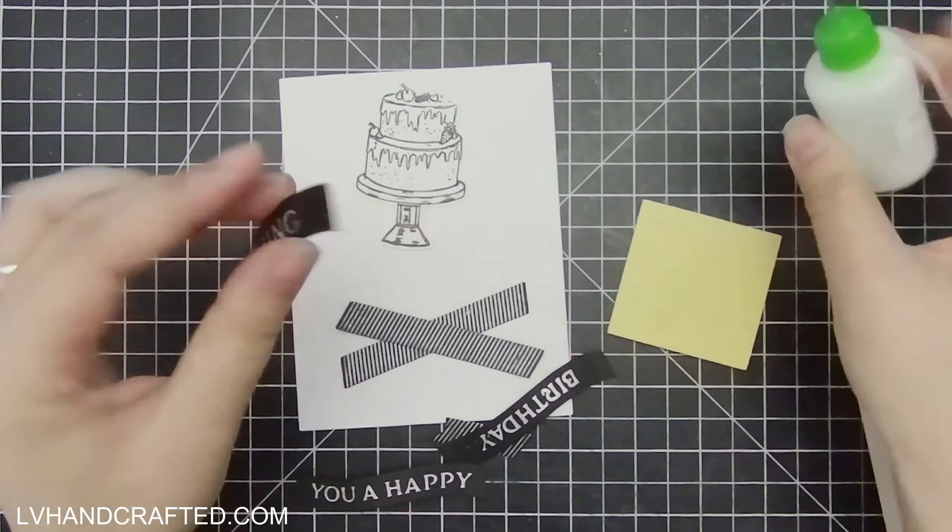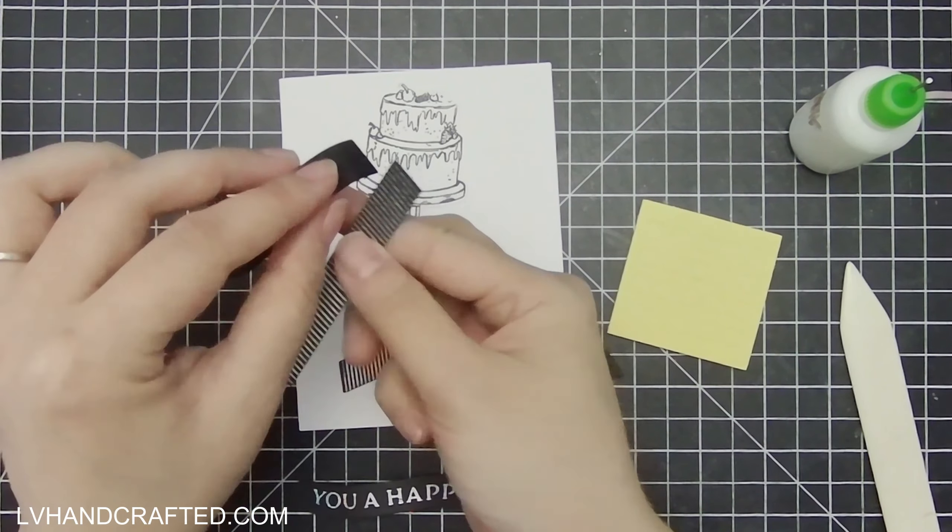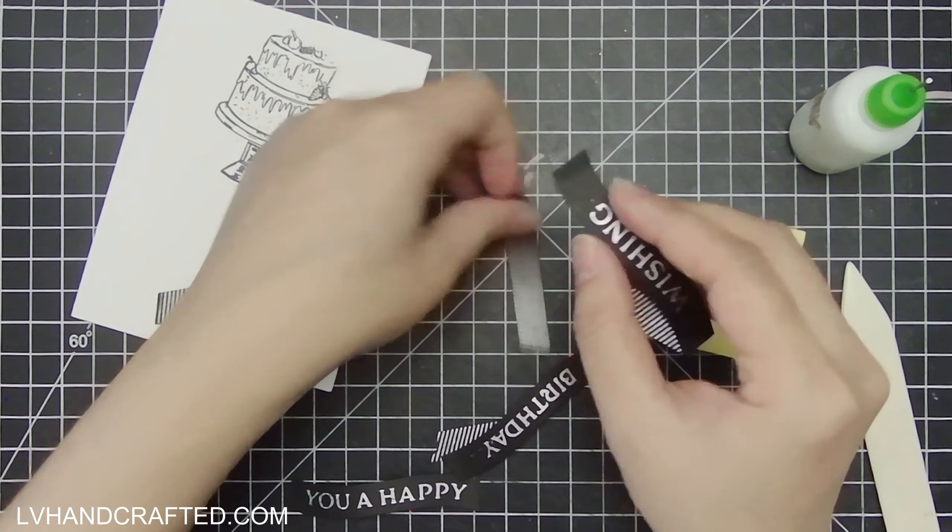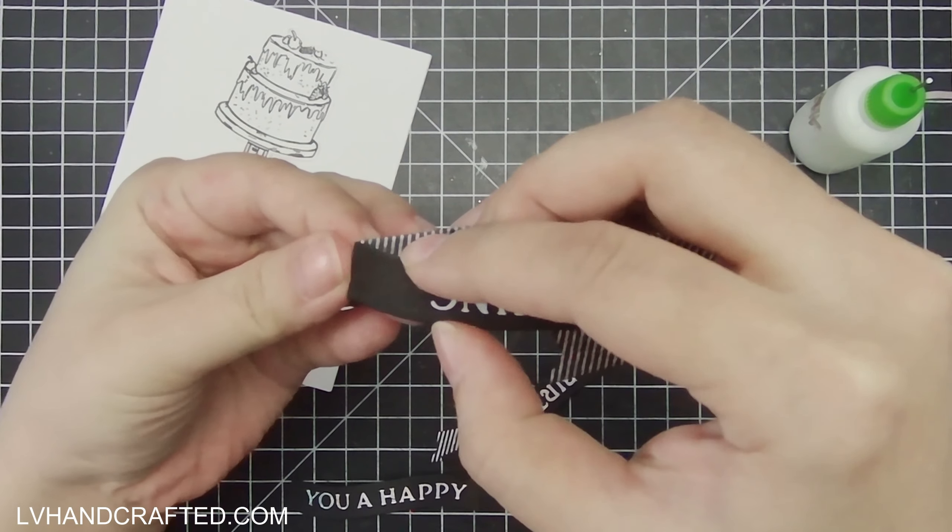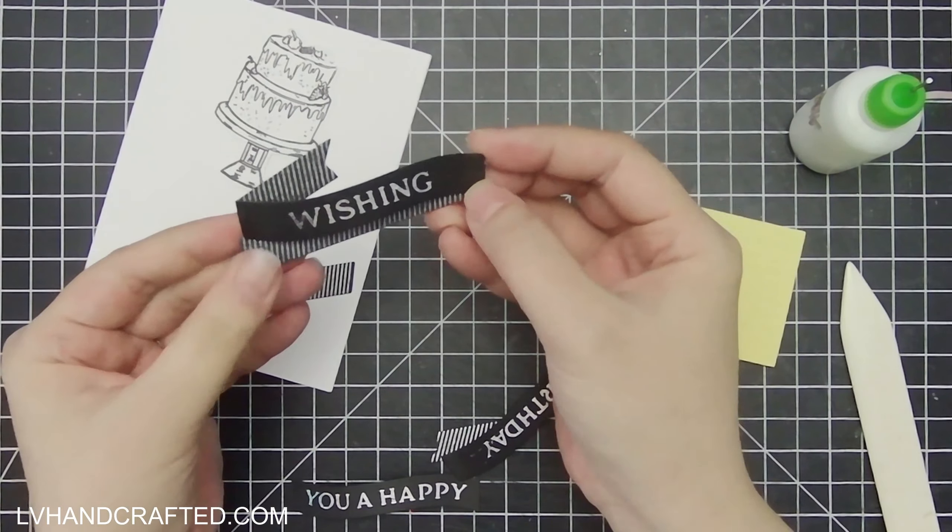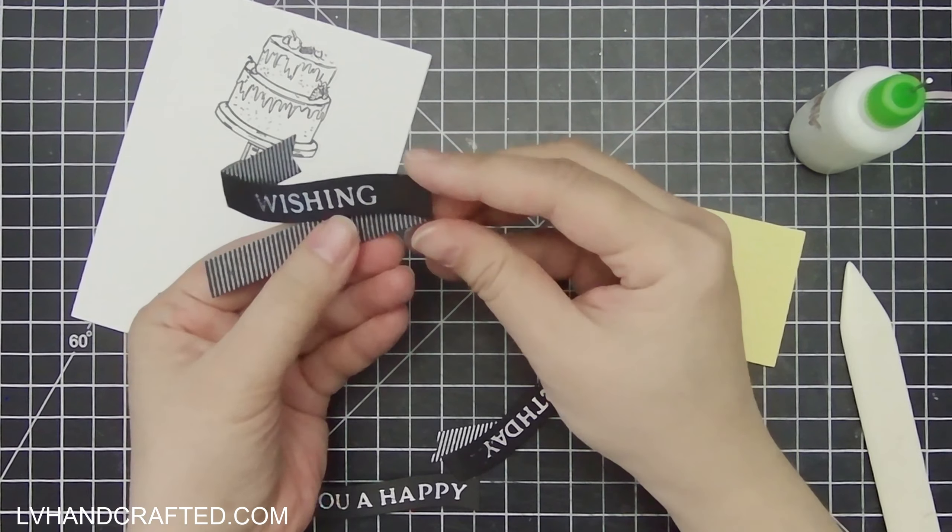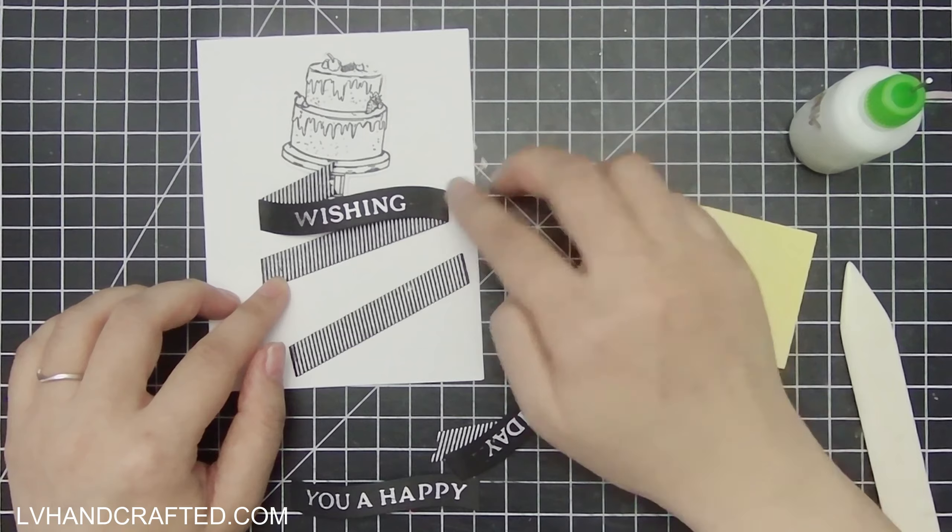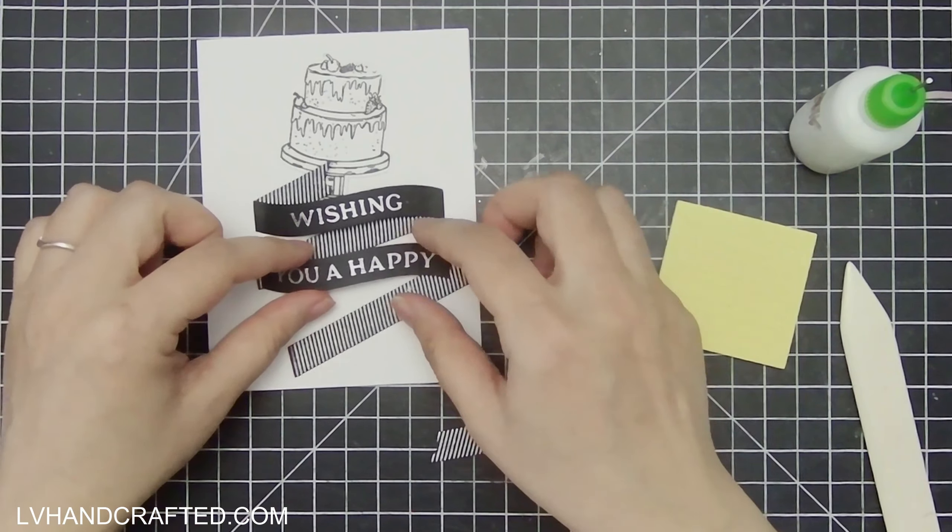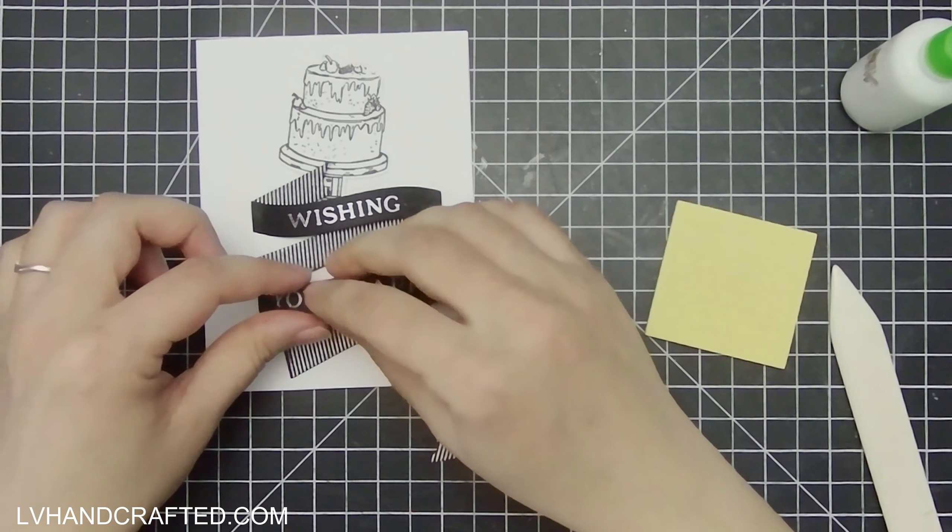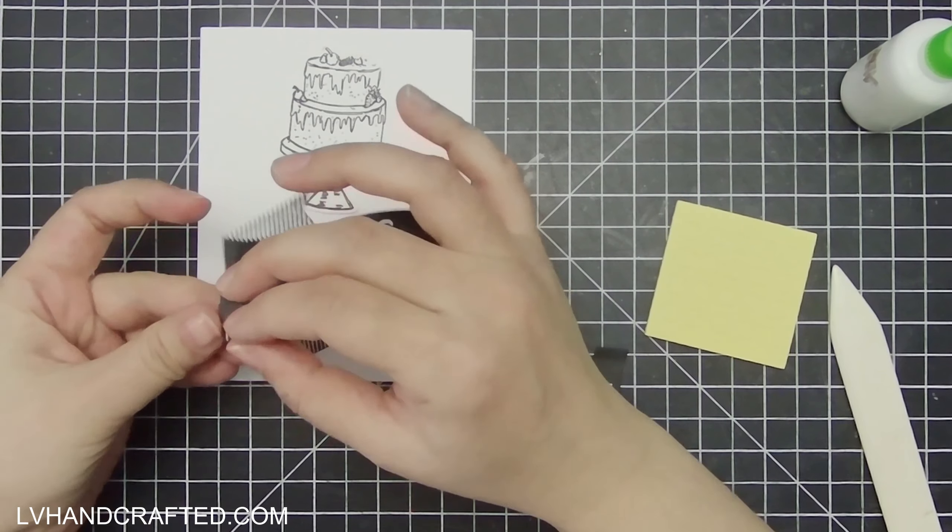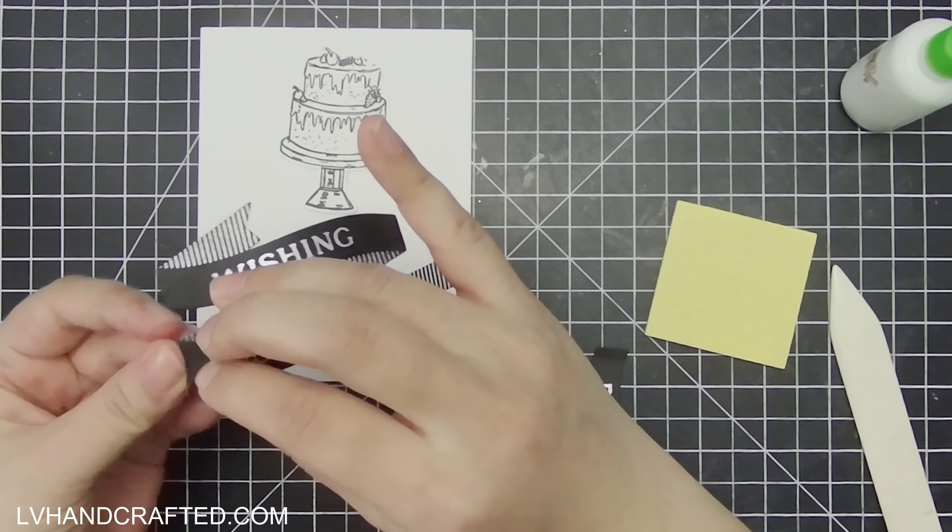And I'm just using my bone folder to give the solid black sections that are in the foreground that have the sentiments foiled onto them some additional shaping and curvature so that those will sit a little bit raised from the card front. And then the sort of shadow...